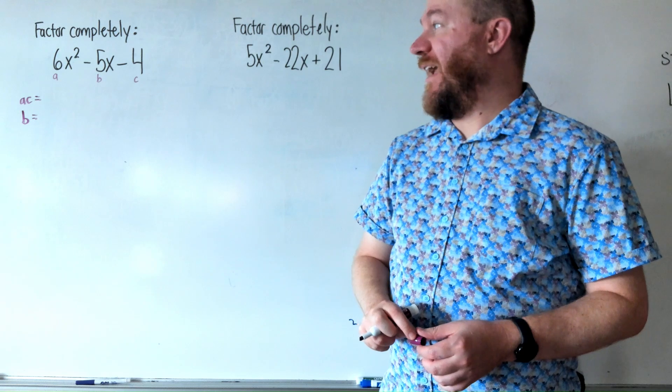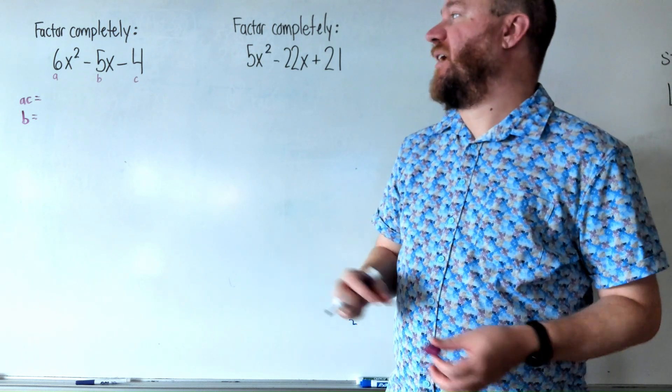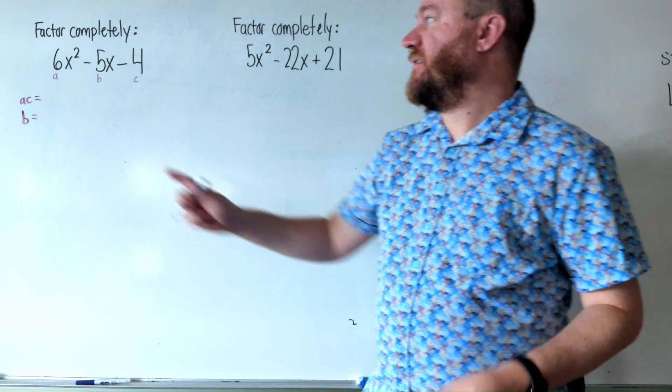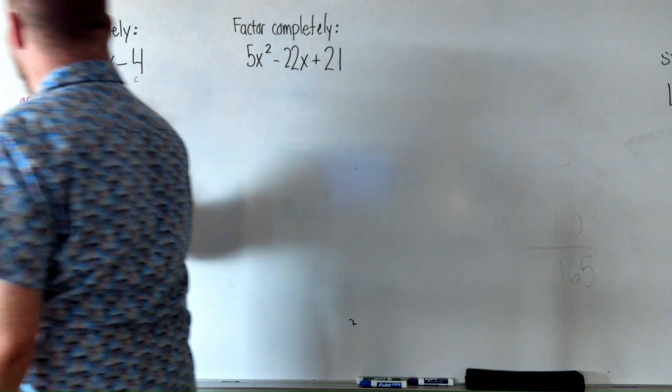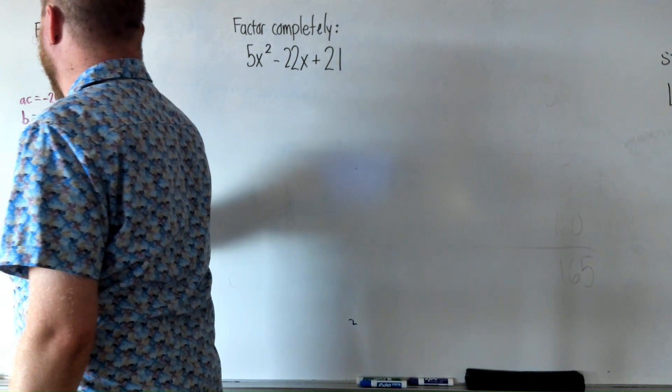Okay, ac means I need to multiply a, c, 6 times negative 4, negative 24, and b is negative 5.